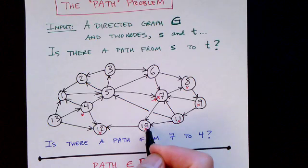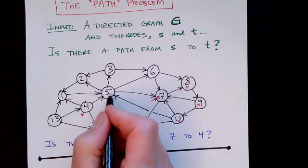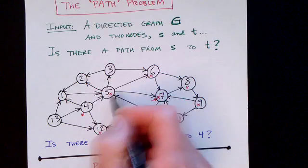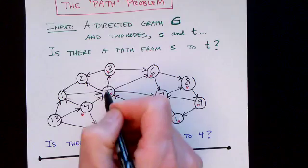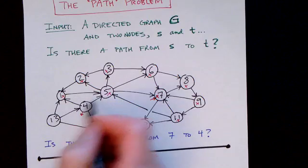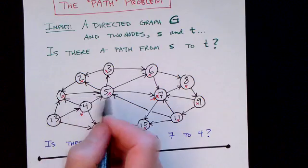What about from 11? Well we can reach 10 which we've already marked, and we can reach 5. And going on that way, we can mark 6 from 5, and then we can mark 3 from 5. We can mark 2, and from 2 we can mark 1, and from 1 we can mark 5.